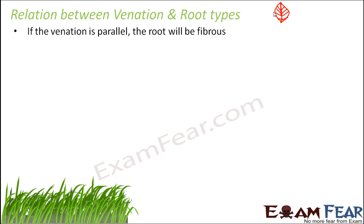When you look at the leaves of a plant, you do not need to uproot it to see what kind of root is present. You just need to observe the leaves. If you see that they have parallel venation, that means the root type would be fibrous. So if the venation is parallel, the root type is fibrous.